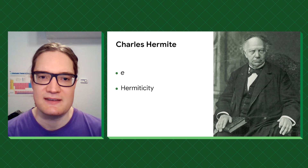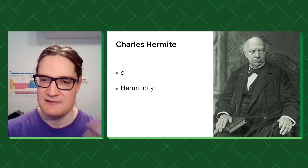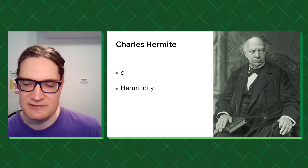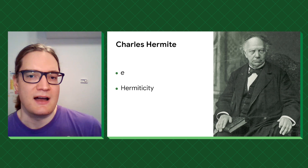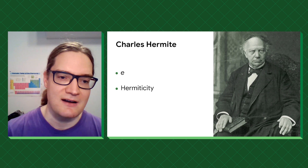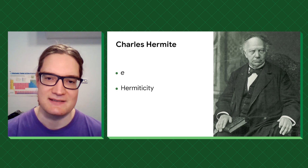First of all, we have this guy on this slide here. This is Charles Hermite, a French mathematician from the 19th century. He was a pretty productive fellow — he proved that Euler's constant e is transcendental, meaning it's not the solution to any algebraic equation over the rational numbers. He also lent his name to the mathematical adjective Hermitian, which is suspiciously close to hermeticity. However, Hermitian refers to self-adjoint linear operators, not related to airtight glass vessels.